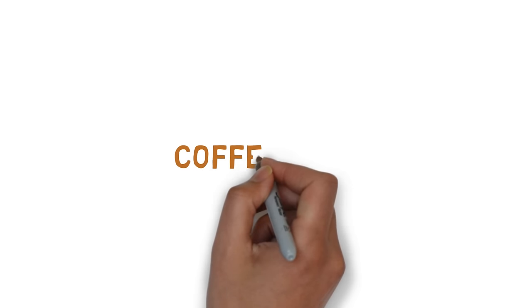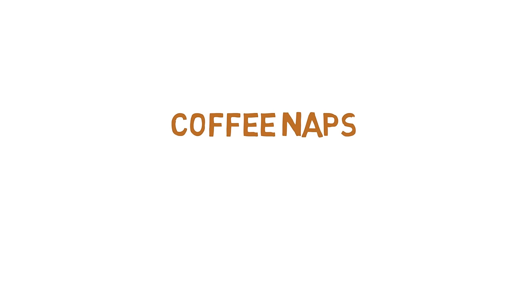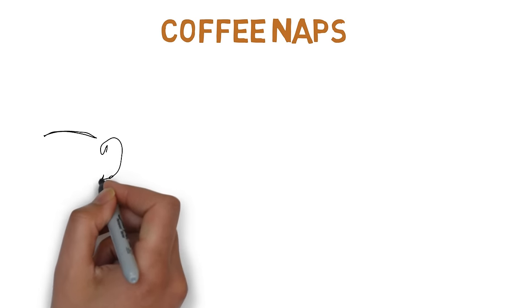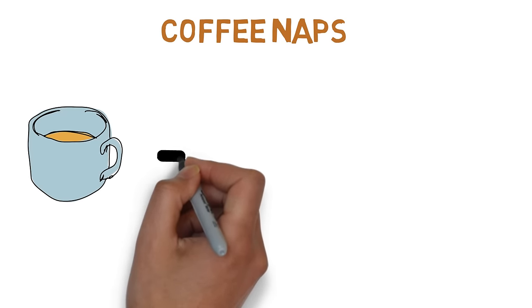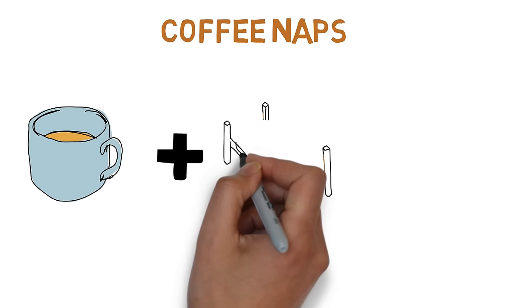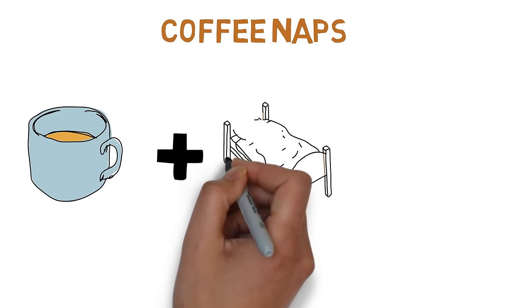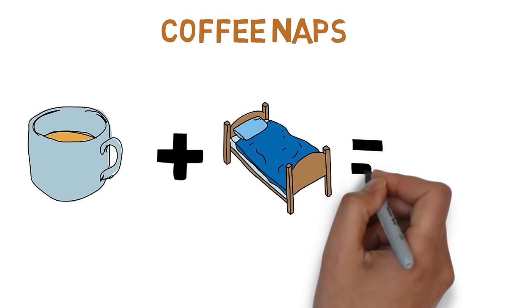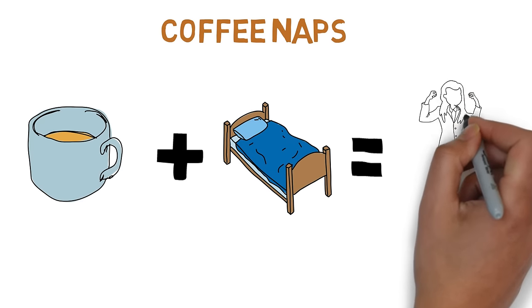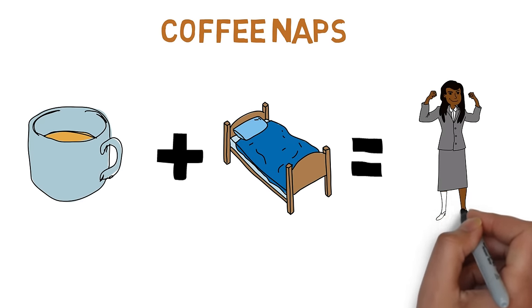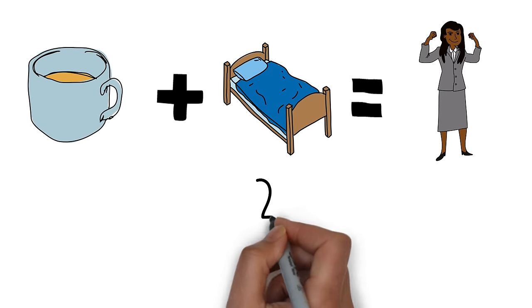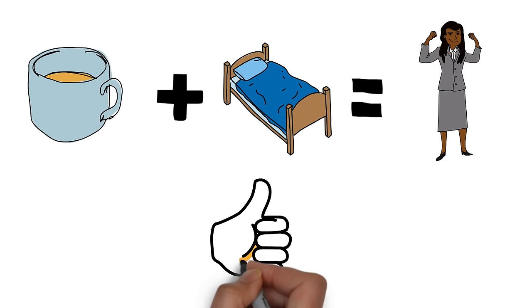Another interesting concept is coffee naps. Here's how they work. Drink a cup of coffee, then take a nap for 20 minutes. By the time you are waking up, the coffee has been absorbed by the small intestine, passed into your blood and is carrying out its effects on your brain. Some studies have even shown that coffee naps demonstrate improved cognitive performance compared to naps alone.